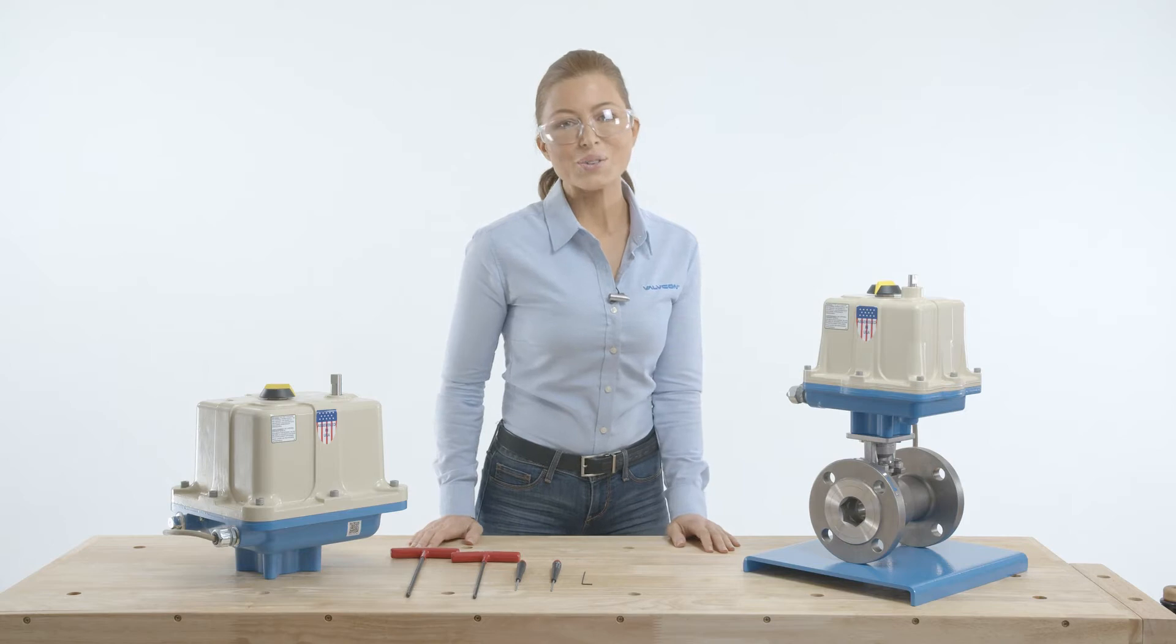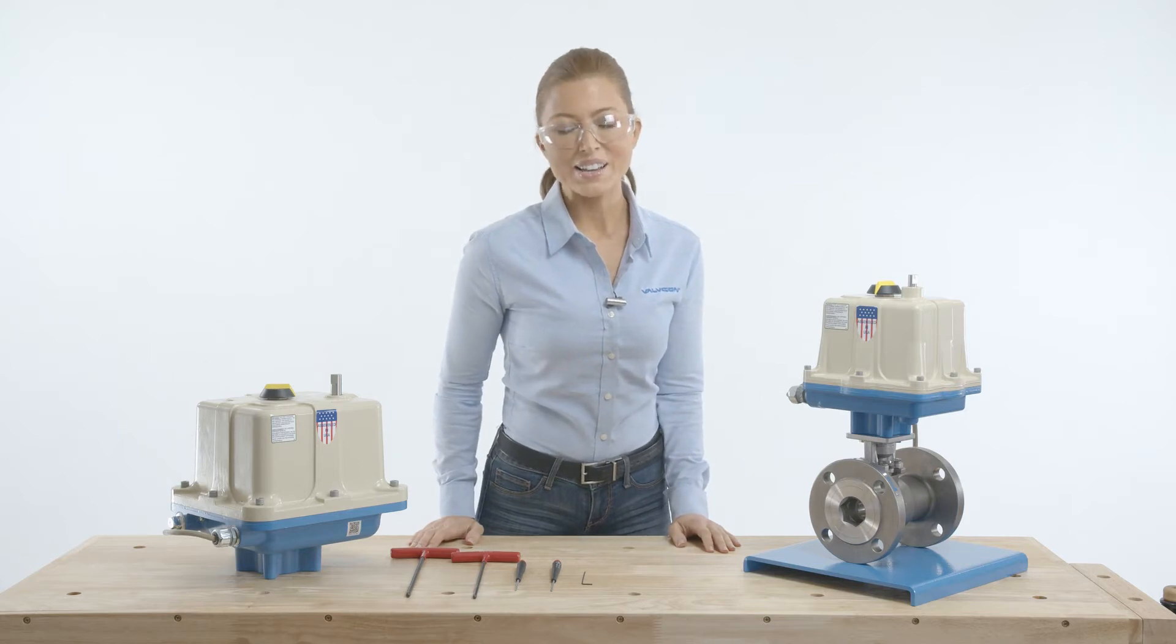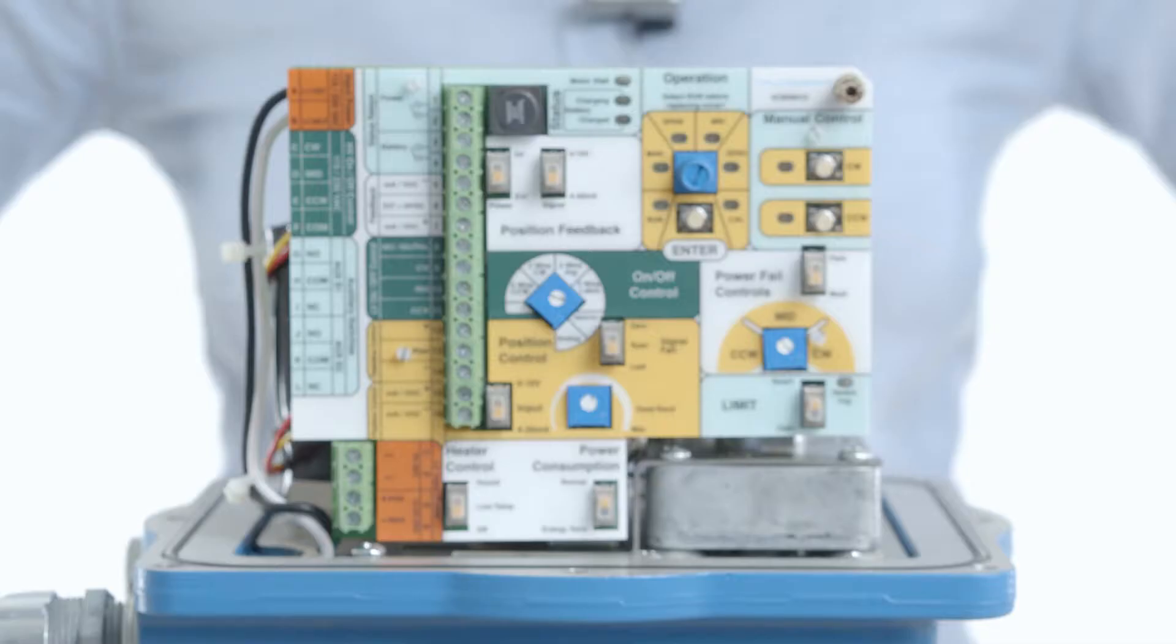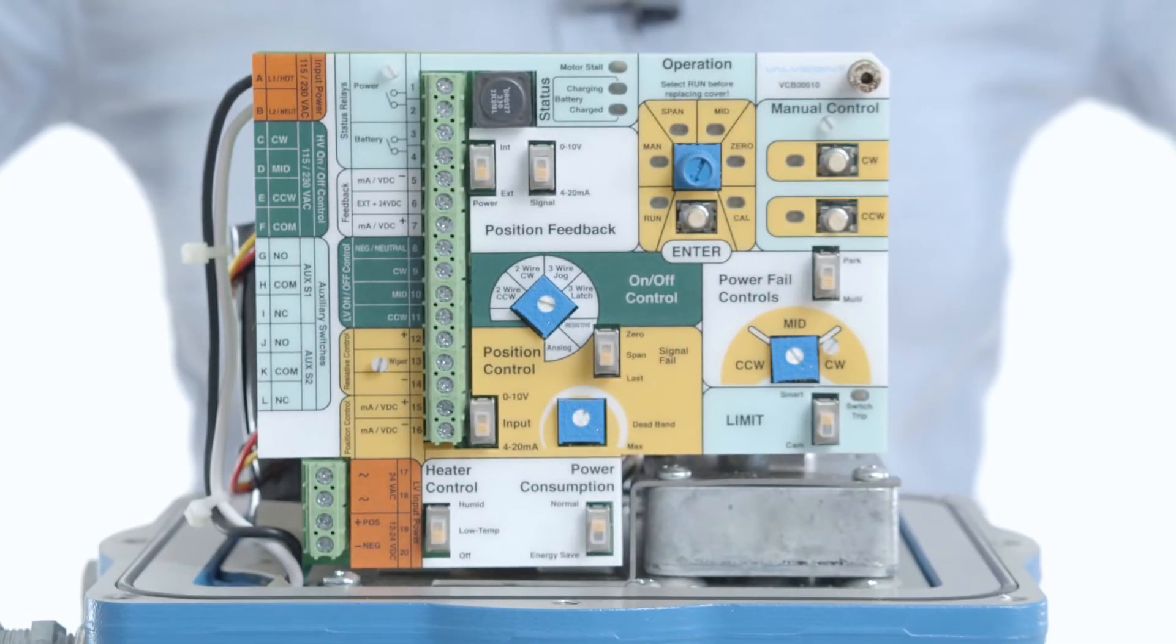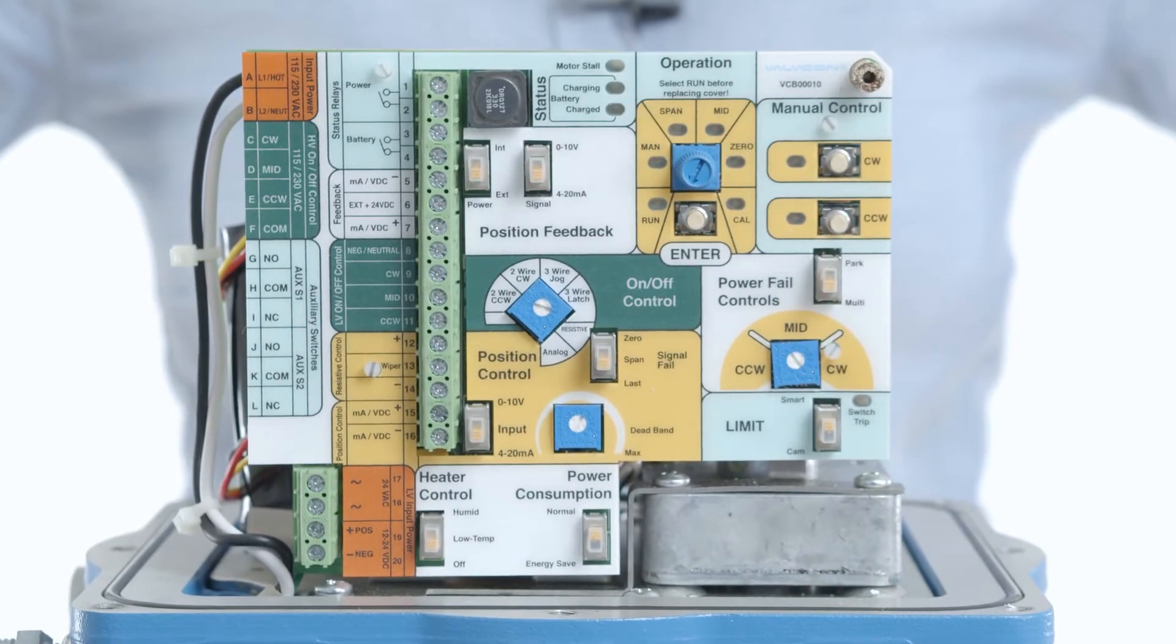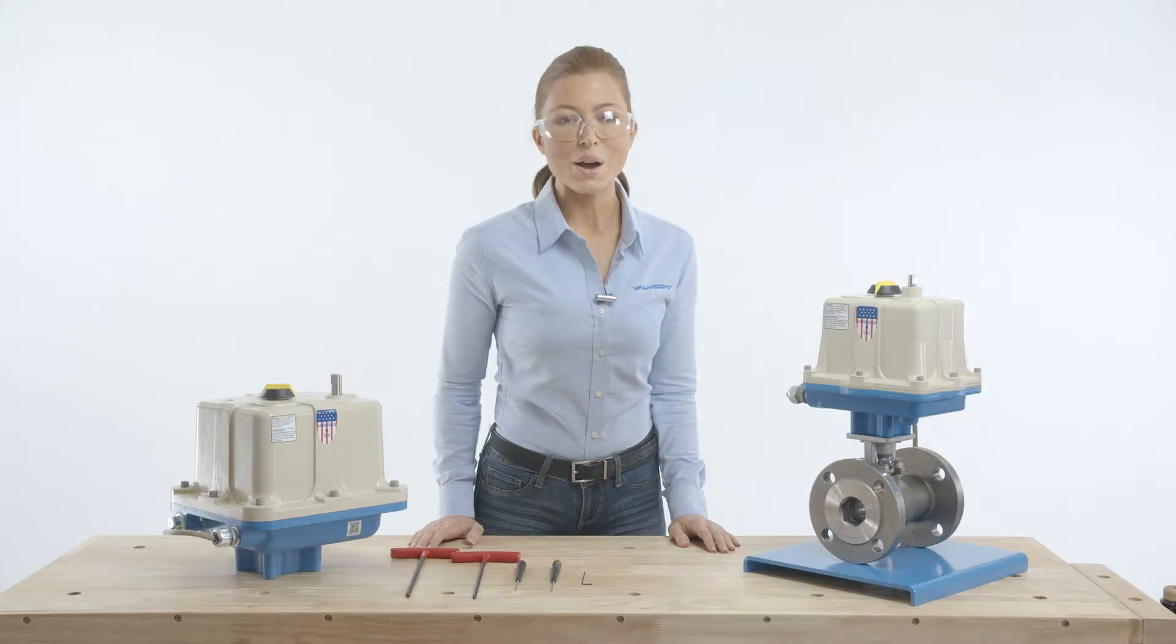In either case, the actuator includes the ADC Series Universal Control Board. The board will accept various voltage inputs and various methods for on-off and positioning control, as well as an optional battery backup feature which allows for driving to a designated position upon loss of electrical power.